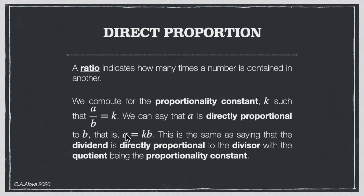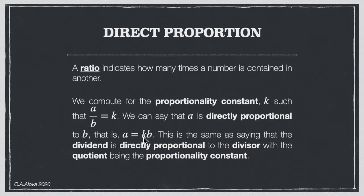This is the same as saying the dividend is directly proportional to the divisor, with the quotient being the proportionality constant. This can be written as the division algorithm: A equals QB plus R, only here we have no remainder. So A is the dividend, K is the proportionality constant, and B is the divisor.